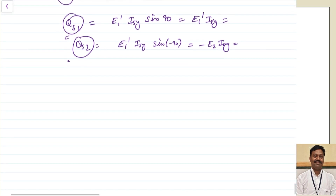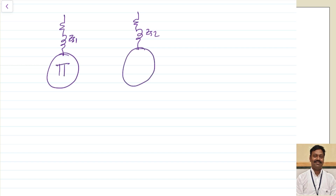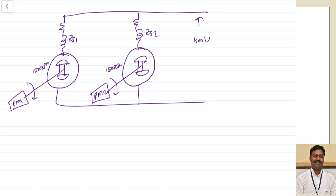Now let us see what will be the effect of change in mechanical input. Let us assume this is machine 1 with Zs1 and machine 2 with Zs2, connected together with their respective prime movers. Let us assume initially they are both running at 1500 RPM, giving a terminal voltage of 400 volts and frequency of 50 Hz.